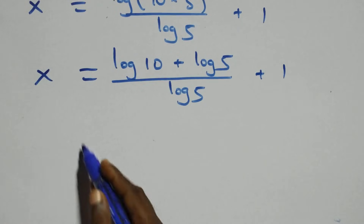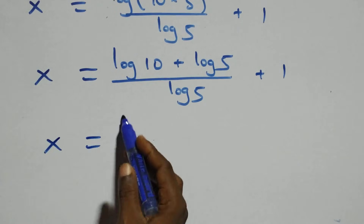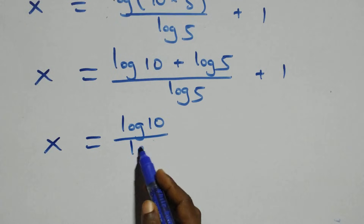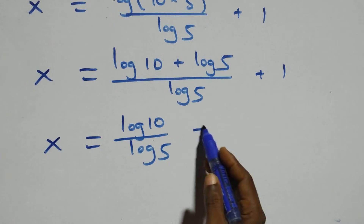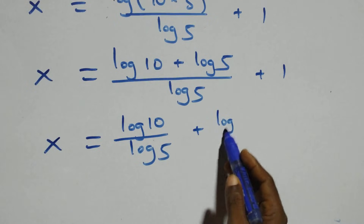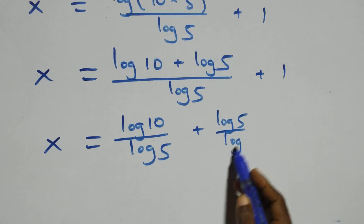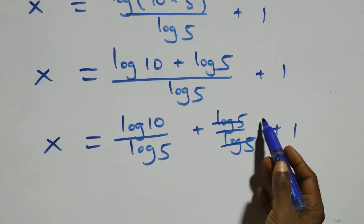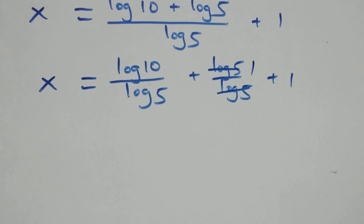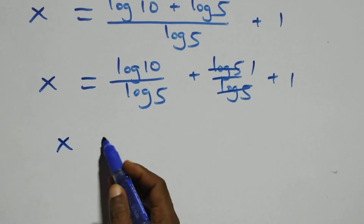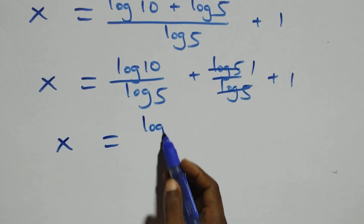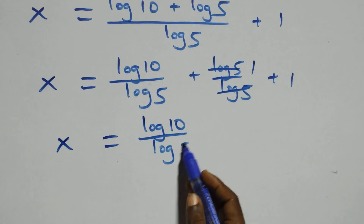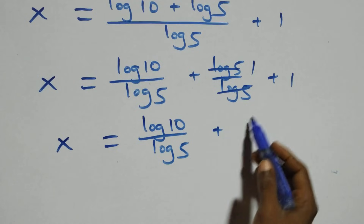We separate this into two fractions: x equals log 10 over log 5, plus log 5 over log 5, plus 1. The log 5 over log 5 cancels to 1, so x equals log 10 over log 5 plus 1 plus 1, which is log 10 over log 5 plus 2.